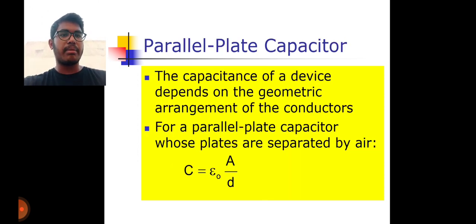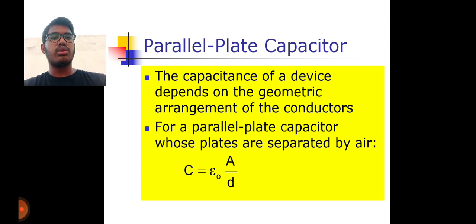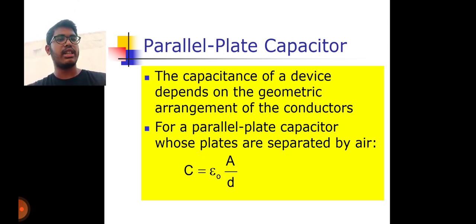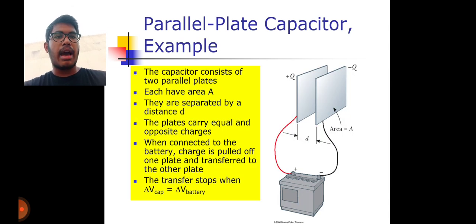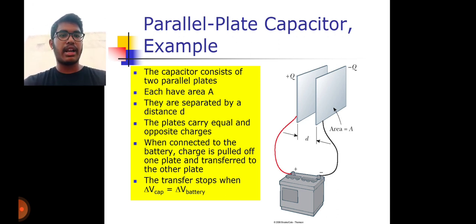Next, the parallel plate capacitor. The capacitance of a device depends on the geometrical arrangement of the conductor. For a parallel plate capacitor whose plates are separated by distance D, C equals epsilon-zero times A divided by D, where epsilon-zero is permittivity, A is the area, and D is the distance between the two plates. The capacitor consists of two parallel plates each of area A, separated by distance D, carrying equal and opposite charges.